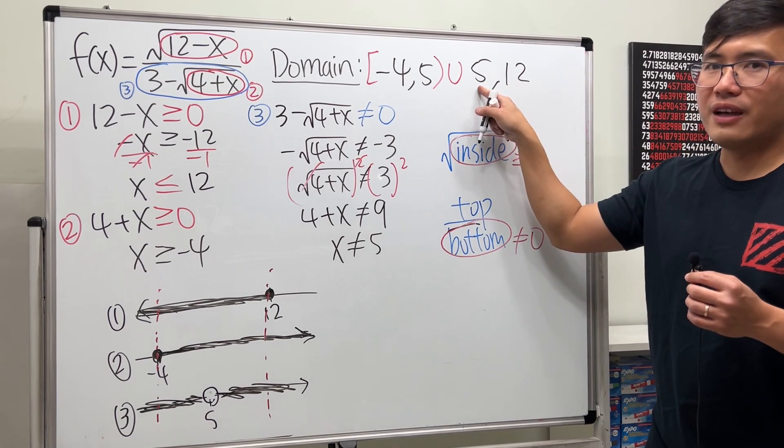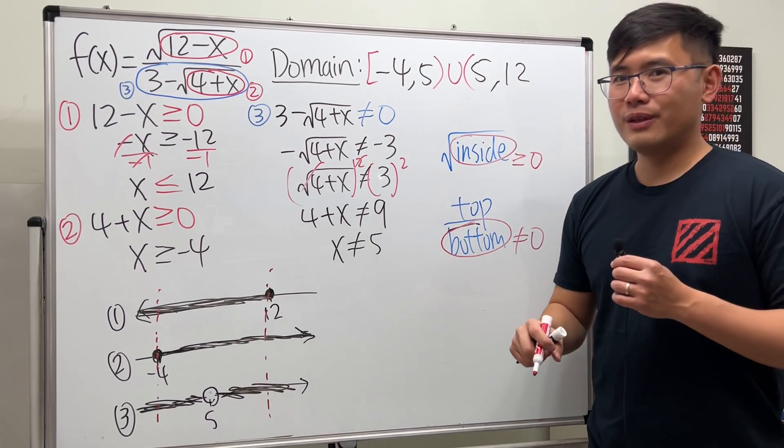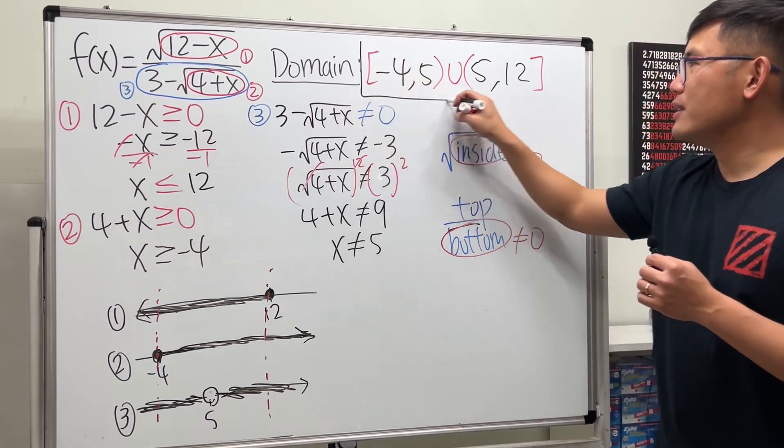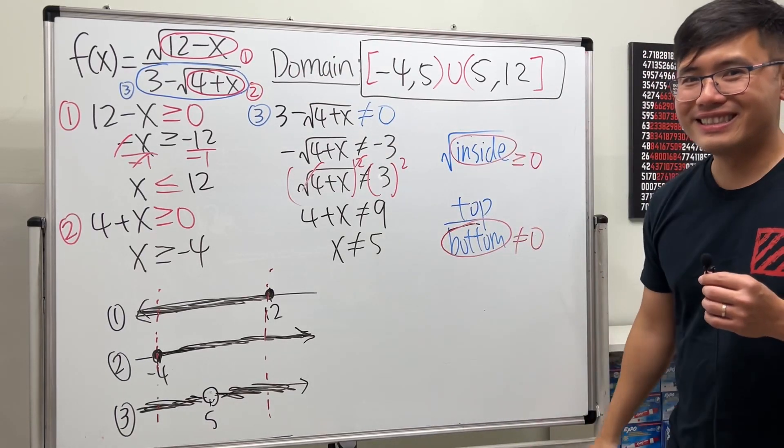So what do we put down for the five? Parentheses, good. And what do we put down for the twelve? Bracket, good. Yeah, so ladies and gentlemen, this is the domain for that crazy function, and that's how you do it.